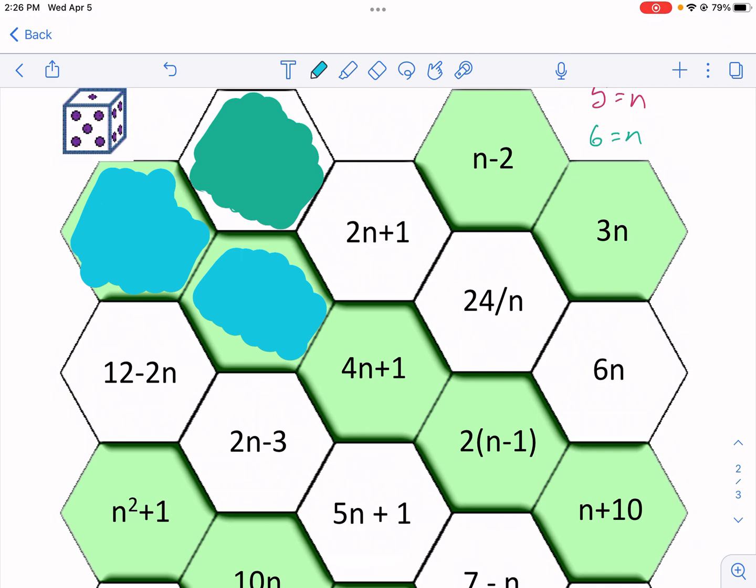The person rolls the dice again. This time they got a two. That one's nice and easy. I'm gonna actually show you how to do this one. We have n equals two. That was what my dice said. So I do two times two. Anytime it's right next to the letter means multiplication. So two times two, and then I add that one.